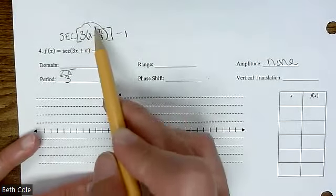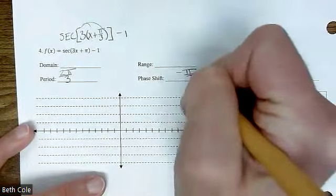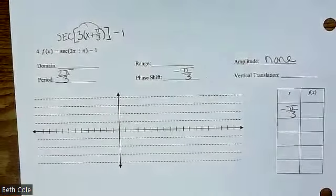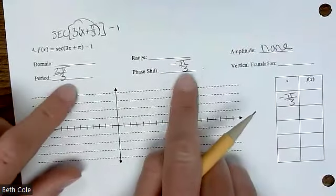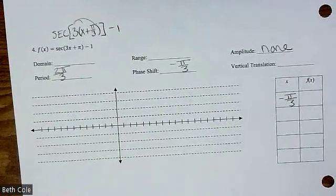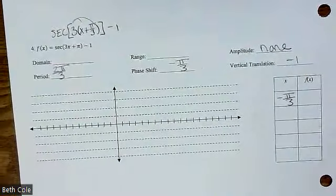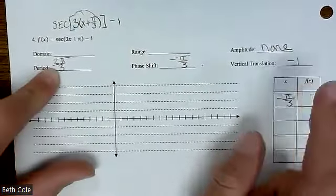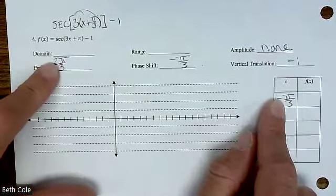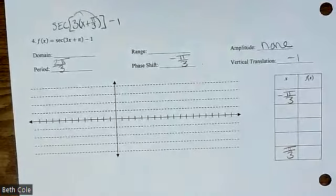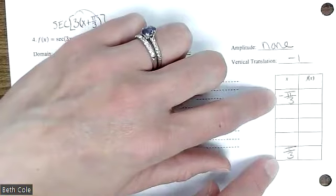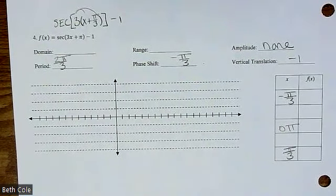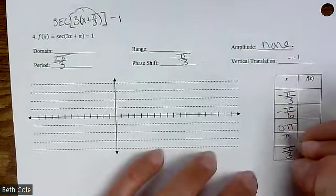Phase shift — left and right, careful because it's backwards. We went left pi over three, so write left pi over three or just negative pi over three. Vertical translation: down one, or just negative one. Starting at negative pi over three, add two pi over three — negative one third plus two thirds is one third. What's halfway between negative one third and positive one third? Zero. Break down thirds into sixths: negative pi over six and positive pi over six.